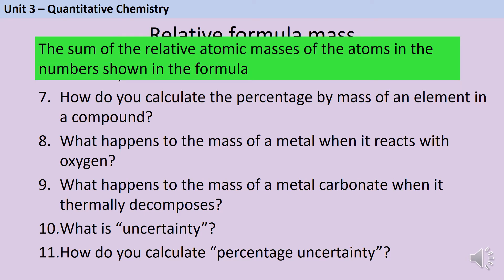To work out the percentage by mass of an element in a compound, you need to work out what the mass of the element is and divide that by the mass of the entire compound, and then multiply this by 100% to give you a percentage.